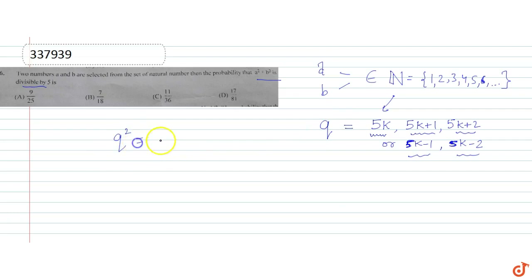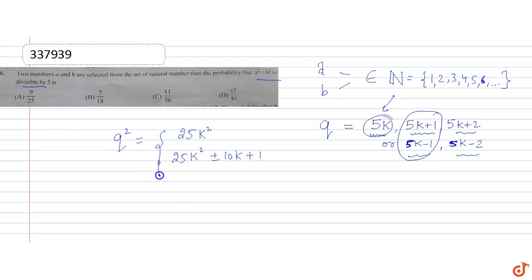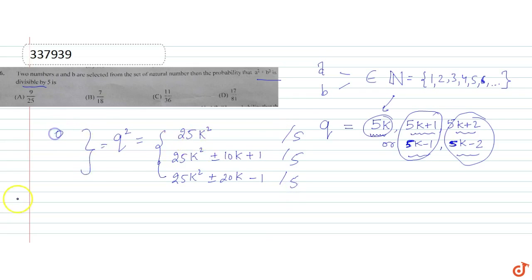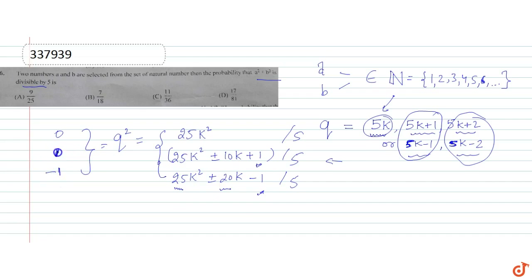Now if you square q, then q squared can be of the form 25k squared — that's squaring 5k. Squaring 5k plus or minus 1 gives 25k squared plus or minus 10k plus 1. Squaring 5k plus or minus 2 gives 25k squared plus or minus 20k plus 4. Dividing by 5, the remainders are 0, 1, and minus 1 respectively.